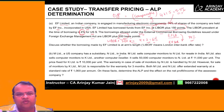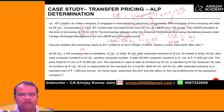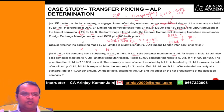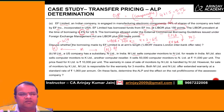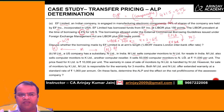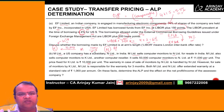Now let's move on to Part B of this question. M Limited, a US company, has a subsidiary N Limited in India. M Limited sells computer monitors to N Limited for resale in India, and also sells computer monitors to K Limited, another computer reseller. N is a related party because it's a subsidiary; K is an independent third party. M sells 50,000 computer monitors to N at 11,000 per unit, while the price fixed for K Limited is 10,000 per unit. The price charged from the related party is more.